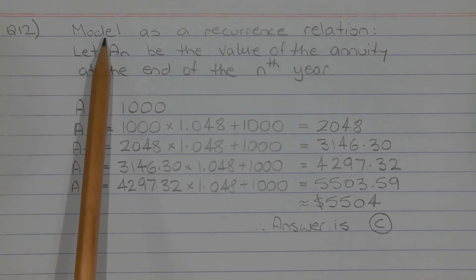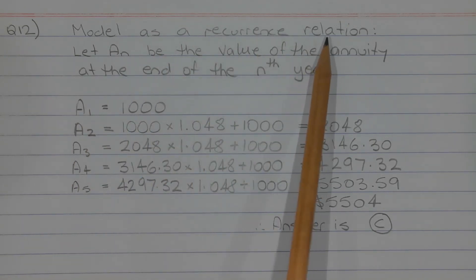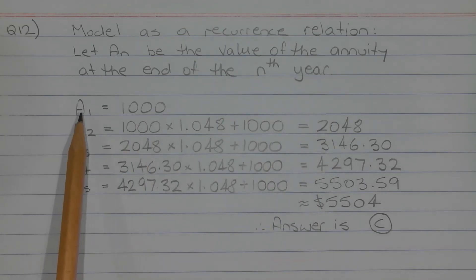Question 12. We can model this financial situation as a recurrence relation. Let AN be the value of the annuity at the end of the nth year. So at the end of the first year, Josephine deposits $1,000 and it earns no interest. So the value of A1 is equal to $1,000.